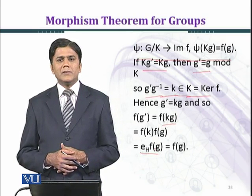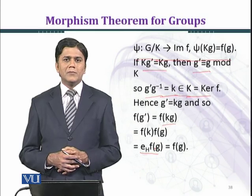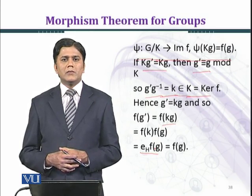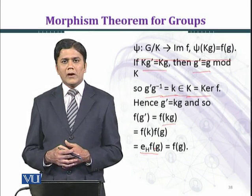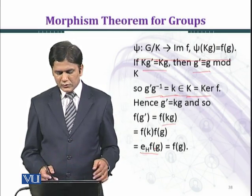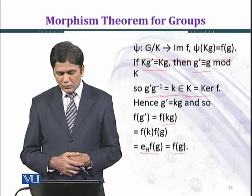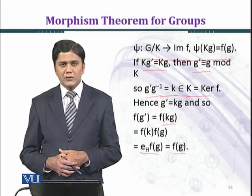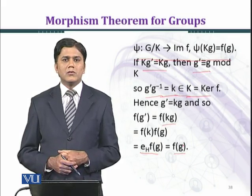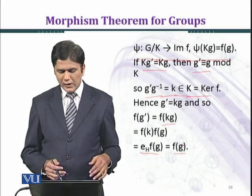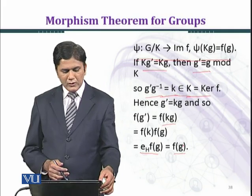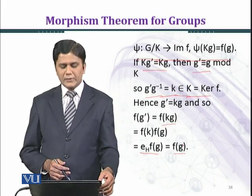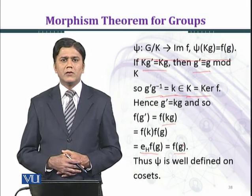F(G) is in the group H, and E_H is the identity element in H. By the identity law, E_H times F(G) equals F(G). So if G prime and G are in the same class, their images are both equal to F(G). Therefore the map psi is well defined on cosets.